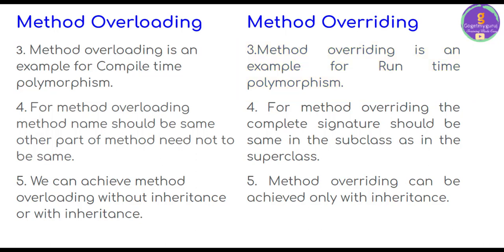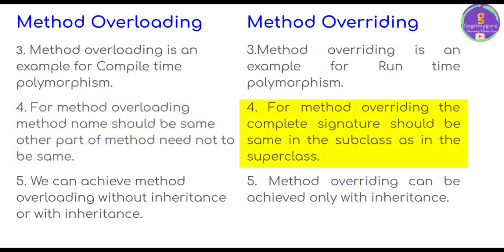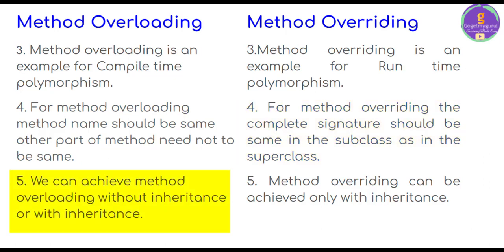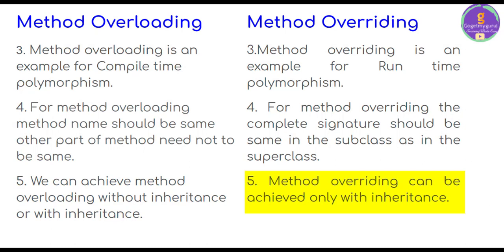The fourth difference is: for method overloading, the method name should be the same but other parts of the method need not be the same. For method overriding, the complete signature should be the same in the subclass as in the superclass. We can achieve method overloading without inheritance or with inheritance, but method overriding can only be achieved with inheritance.